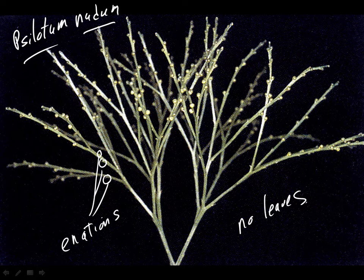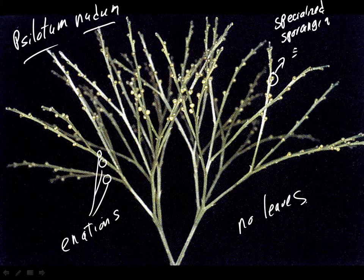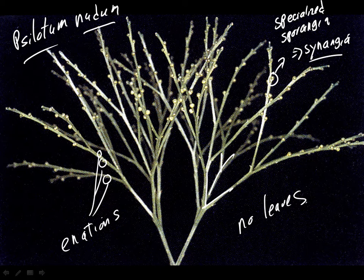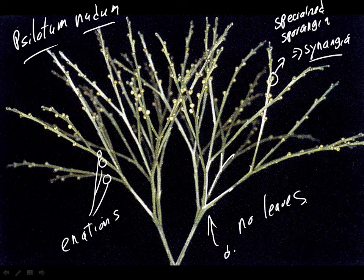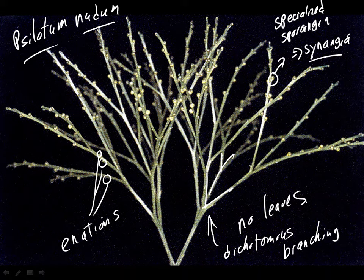There are also some specialized kinds of sporangia, which I'll call specialized sporangia — they are going to be called synangia. And the plant also has the most clear dichotomous branching we are going to see all semester. It has really equal dichotomies: every branch is equal, every time it branches there are equal dichotomous branches. Dichotomous branching was essentially defined for this plant, it is so archetypal.